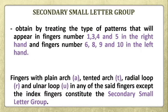The secondary small letter group is obtained by treating the type of patterns that appear in fingers number 1, 3, 4, and 5 — with the exception of finger 2 — and fingers number 6, 8, 9, and 10 in the left hand. Fingers with a plain arc will be represented by small letter A, tented arc by small letter T, radial loop by small letter R, and ulnar loop by small letter U. All fingers except fingers number 2 and 7 constitute the secondary small letter group, since those index fingers were already classified during the capital letter group.